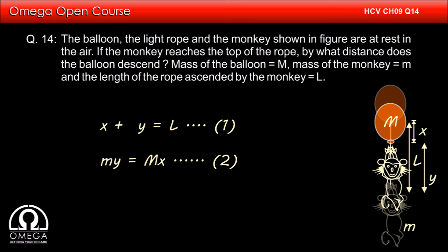Since the product of mass and displacement for the monkey and balloon has to be equal, m into y must be equal to capital M into x.